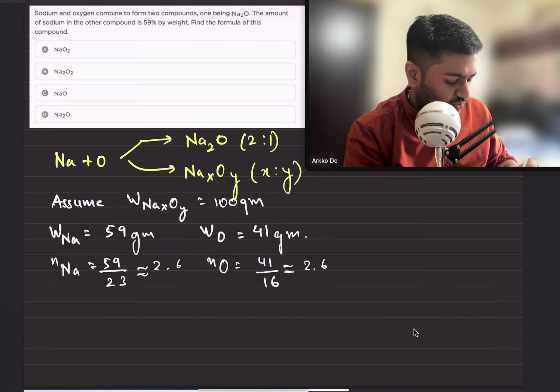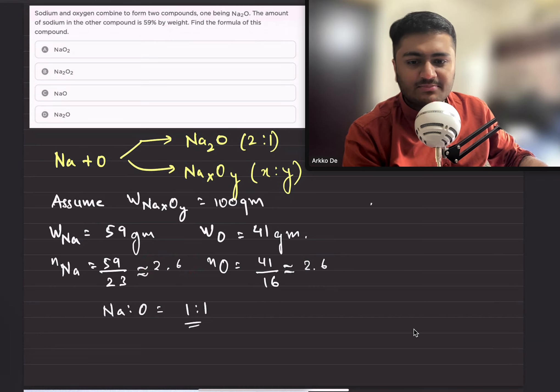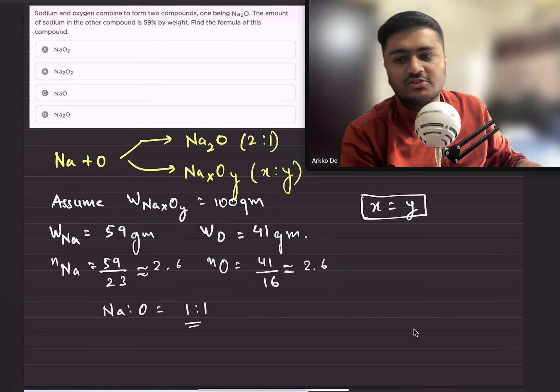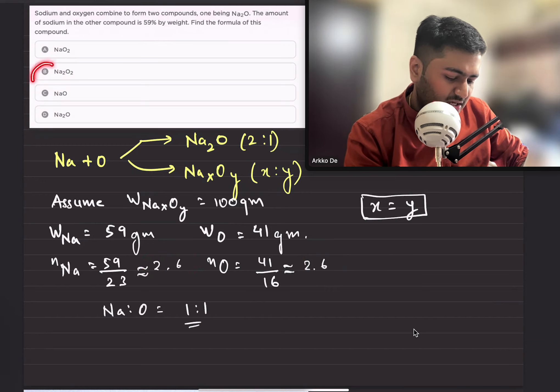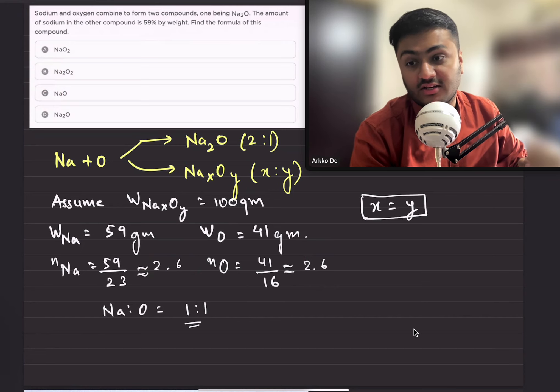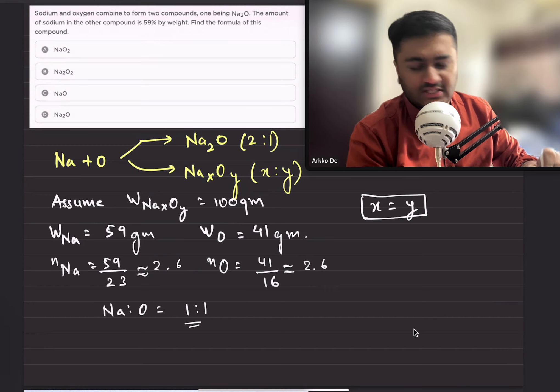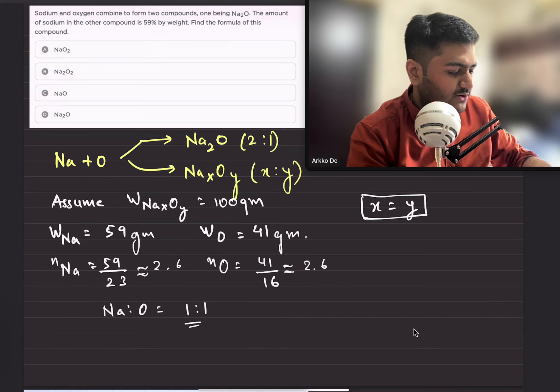can say that the molar ratio of sodium and oxygen is 1:1. From this I can conclude that x must be equal to y. So it will be either option B or C. What I'm going to do is consider x and y to be equal, so let's take both as x. So let's consider Na_x O_x as the compound.